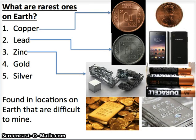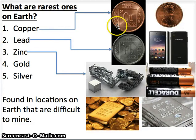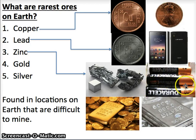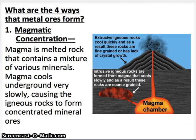On the flip side, the rarest ores are not found readily and exist in very small amounts around the world. These include copper; lead, found in some cell phones and electronics and also very deadly to the body; zinc, a key part in batteries; and gold and silver.